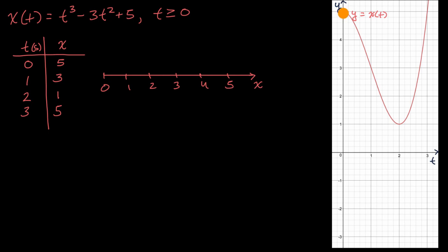But you see the same thing. At time t equals one, our position has gone down to three. Then it goes down further. At time equals two, our position is down to one. And then we switch direction, and then over the next second, we get back to five.